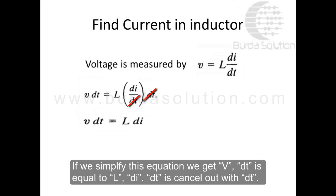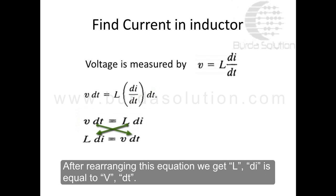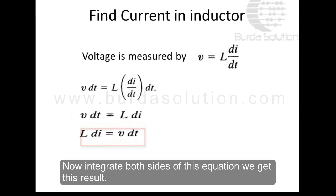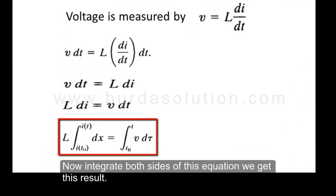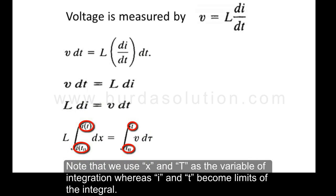dt cancels out with dt. After rearranging, we get L di = V dt. Now integrating both sides of this equation, we get the integral form. Note that we use x and t as the variables of integration, whereas i and t become the limits of the integral.